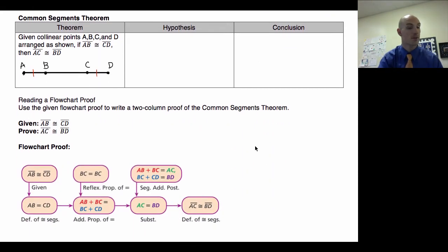First, we need to talk about the Common Segments Theorem. The Common Segments Theorem says that given collinear points A, B, C, and D arranged as shown, if AB is congruent to CD, then segment AC is congruent to segment BD. Our hypothesis then is AB is congruent to CD. We got that from over here. So if this is true, then the other part is true.